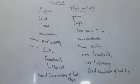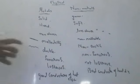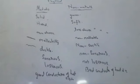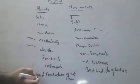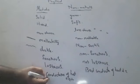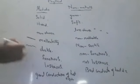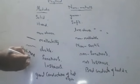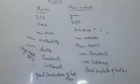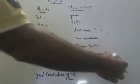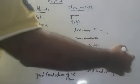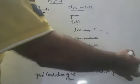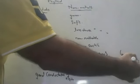Graphite is an exception among non-metals — it is a good conductor. Since metals are solids, they have high melting points and high boiling points. To melt or boil them, you need higher temperatures. Non-metals are gases, so they have low melting points and low boiling points.